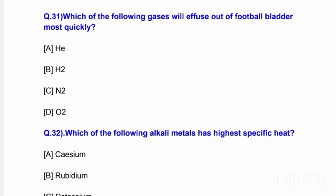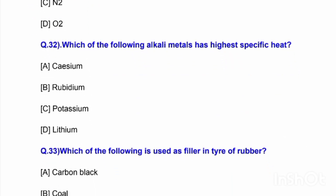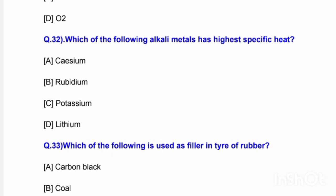Glass vessel is the most suitable for storing concentrated sulphuric acid. Next question: Which of the following gases will effuse out of a football bladder most quickly? Options are helium, hydrogen, nitrogen, and oxygen. The correct answer is option B — hydrogen. Next: Which alkali metal has the highest specific heat? Options are cesium, rubidium, potassium, and lithium. The correct answer is option D — lithium.